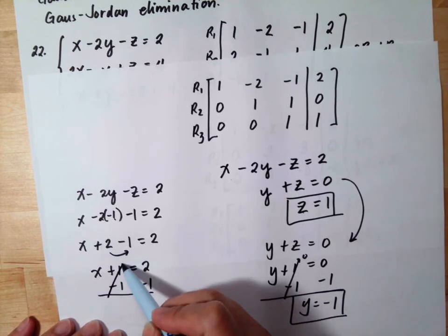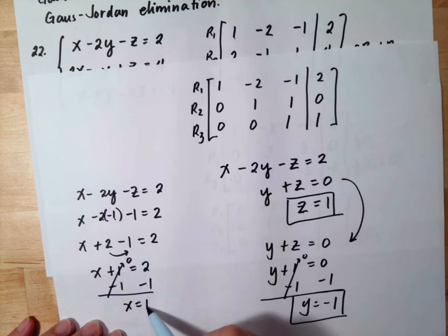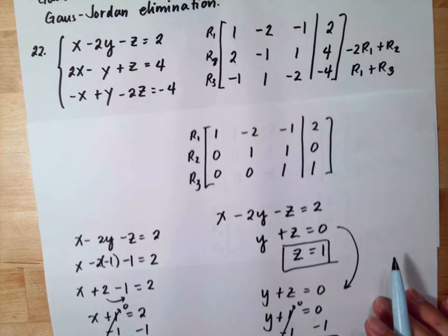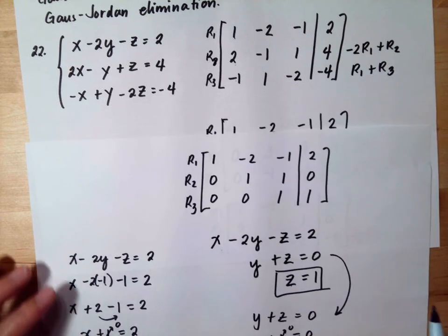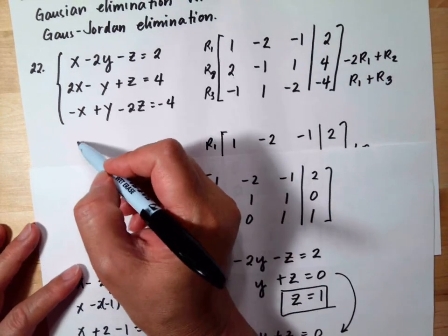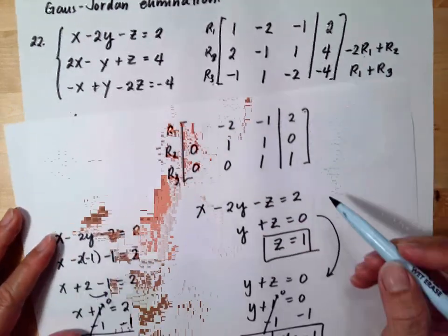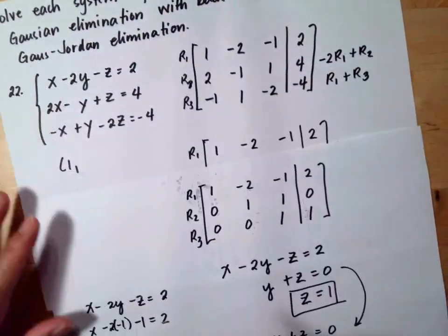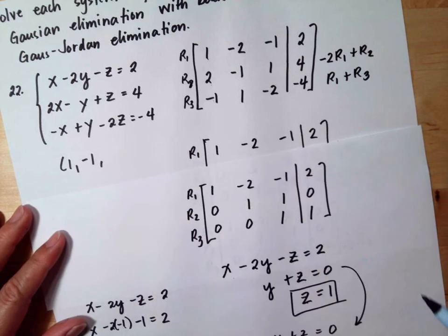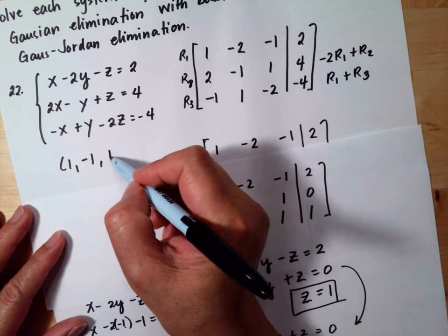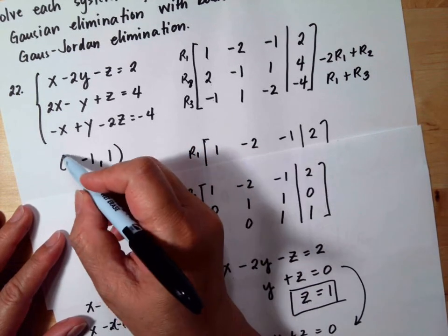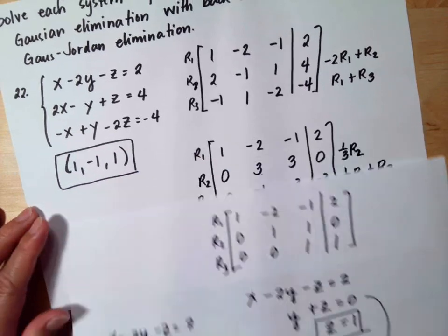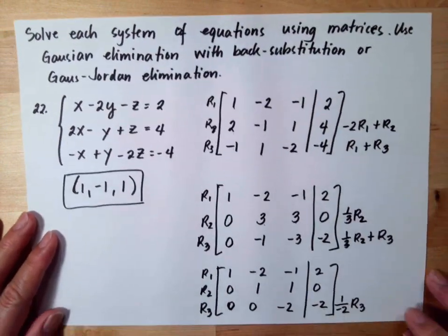Subtracting 1 from both sides gives x = 1. So our triple solution for this problem is x = 1, y = −1, and z = 1.